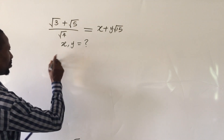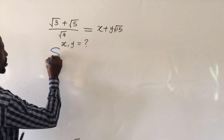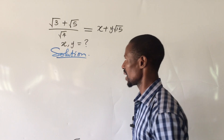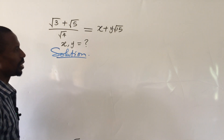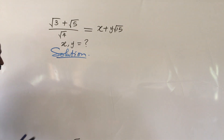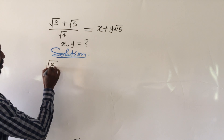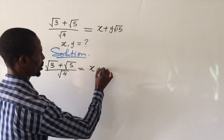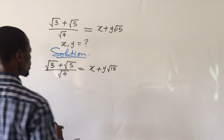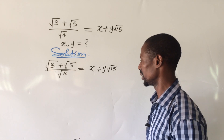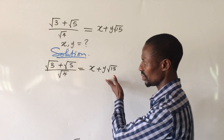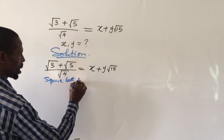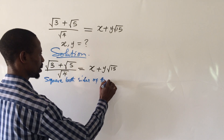Let's go to the board and put down our question. The question looks a bit simple but not as simple as you may think. I'm going to touch every step of the procedure without missing anything for your understanding. The question is: √3 + √5, all over √4, equals x + y√15. The first thing we're going to do is square both sides of this equation.